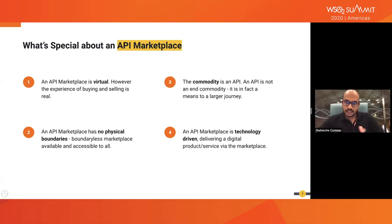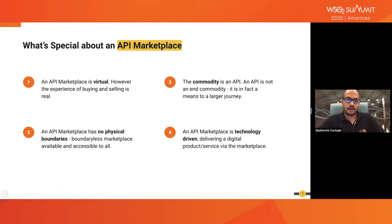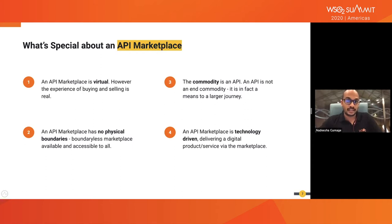Secondly, there are no physical boundaries — this is the biggest difference. If you have a physical marketplace, access is limited to people who live in that geography. But with an online or API marketplace, your boundaries are virtual, essentially boundaryless. Anyone who has access to the internet has access to your marketplace if it is a public marketplace.